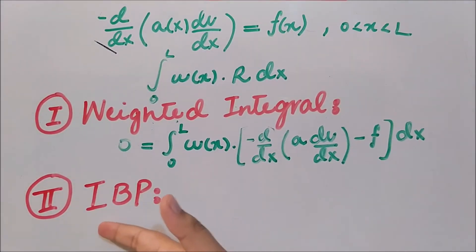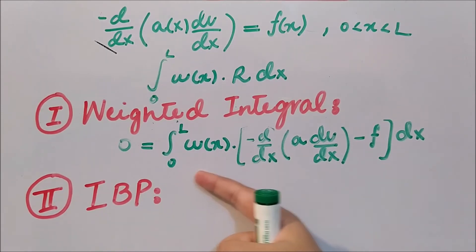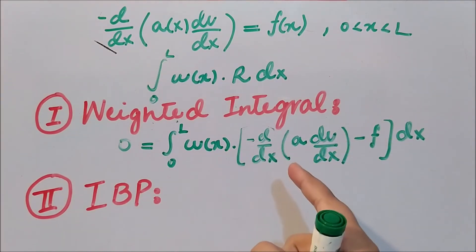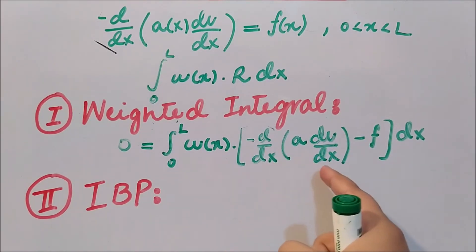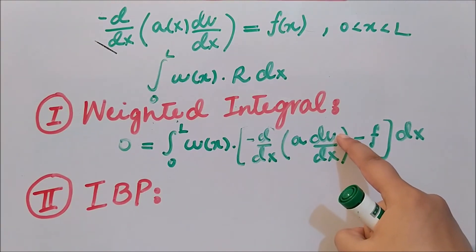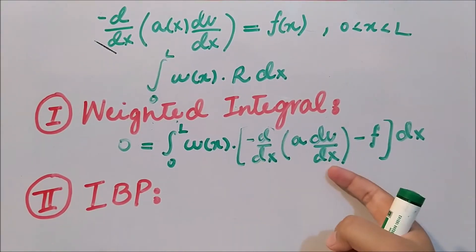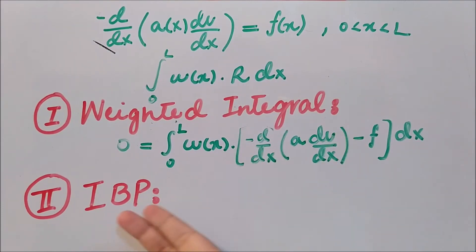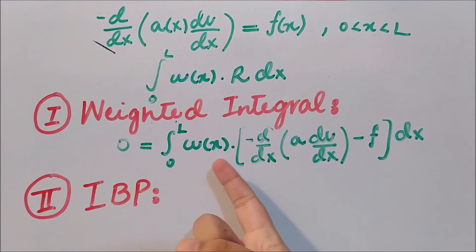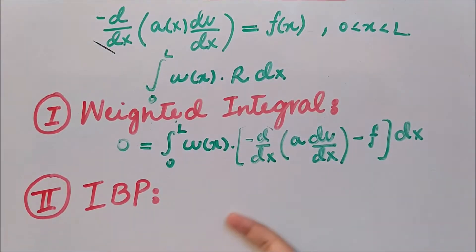The second step is integration by parts. We do this because, as the name implies, we need a weak formulation — we have to weaken the differentiability of the variable we are solving for. We can also say we evenly distribute the differentiation. When applying integration by parts, there is a first sub-step and a second sub-step according to the given situation.